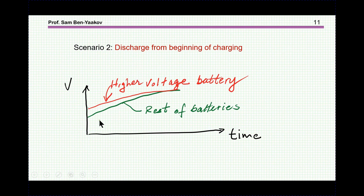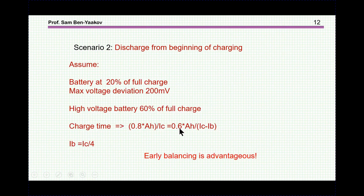If during discharge, we can identify the battery with the higher voltage from the beginning, then we can bypass some of the charging current for that battery along this charging time, such that it will reach the maximum with all the other batteries, which are charged with a higher current. This is much more preferable. Let's have a look in more detail into scenario two, in which we start operating the balancing circuit from the beginning of the charging.